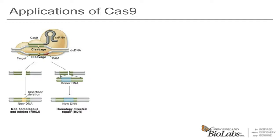Later in this presentation, we will discuss how to detect these indels. As an alternative repair pathway, homology-directed repair will allow for adding exogenous DNA by presenting a donor DNA from which the cell can repair via the homologous recombination pathway. In this application, precise modifications or additions can be made. In addition to wild-type Cas9, biotechnology has created Cas9 variants with additional properties.